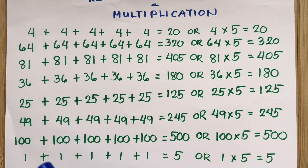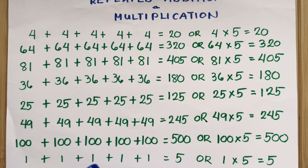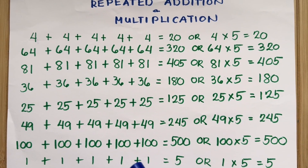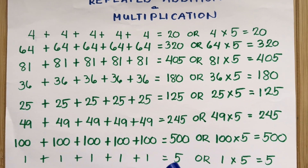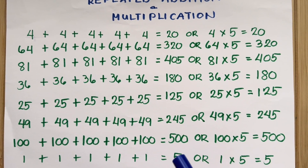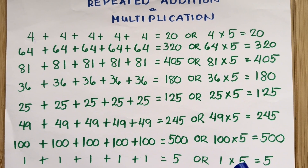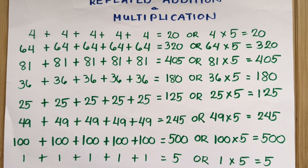Lastly, 1 plus 1 plus 1 plus 1 plus 1 is equals to 5. Or, 1 times 5 is equals to 5.